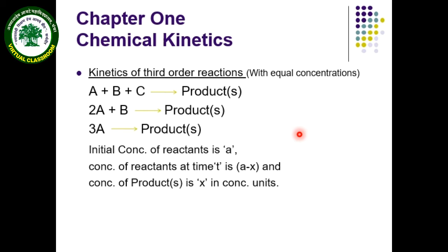In the first-order kinetics equation, k₁ is the first-order reaction rate constant, t is the time, a is the initial concentration of reactant, and (a minus x) is the concentration of reactant remaining unreacted at time t, while x is the amount of reactant reacted at time t — or in other words, x is also called the concentration of product formed at that instant. A common example for first-order reactions is the thermal decomposition of acetone as well as N₂O₅.